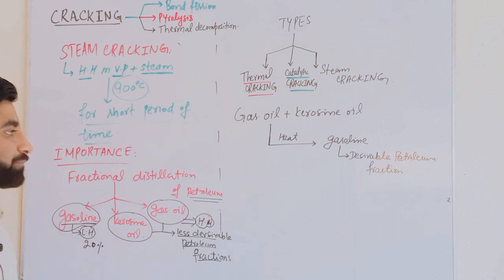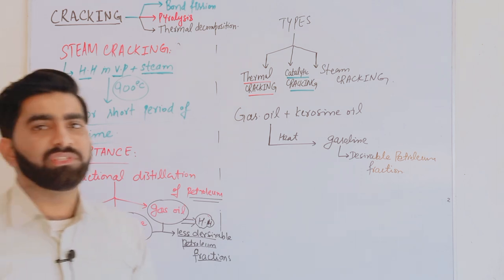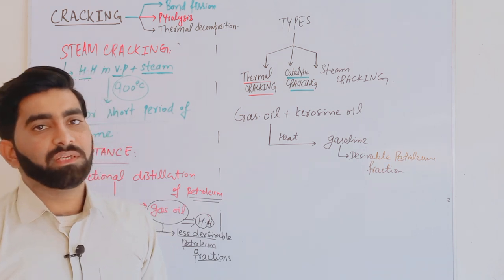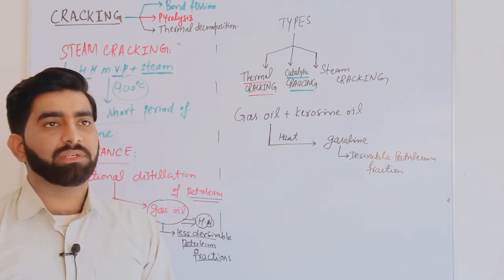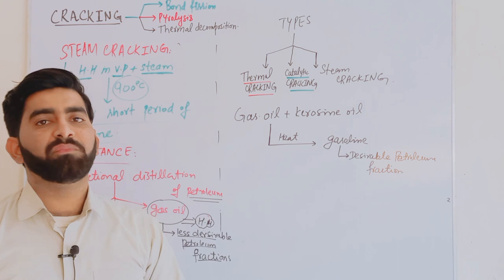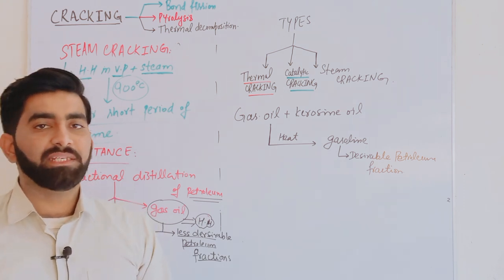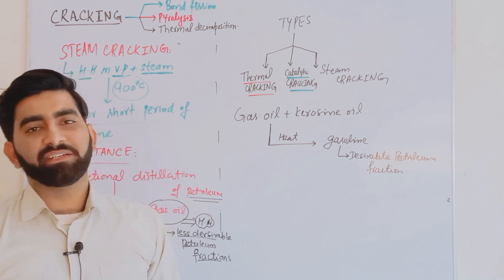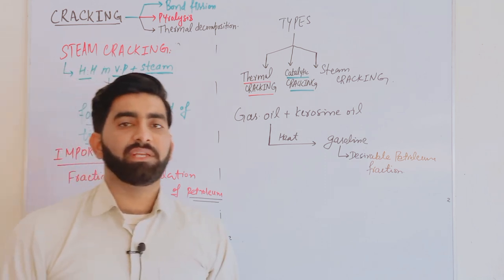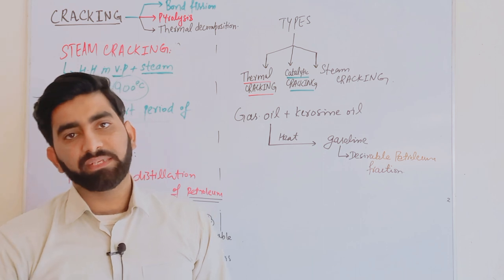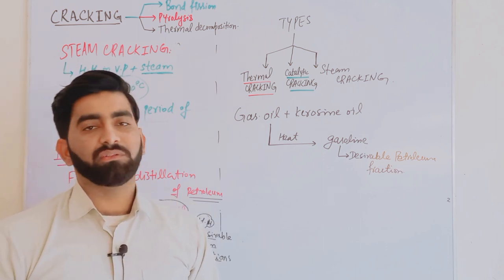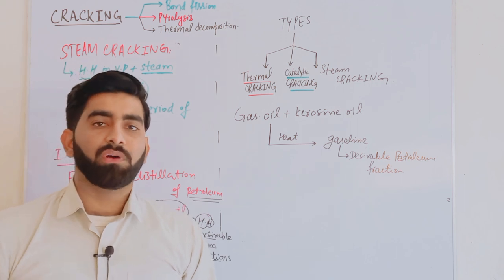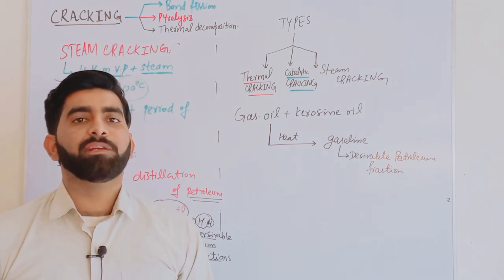When we use cracking, some byproducts are also formed along with the major products. These byproducts include ethene, propene, butene, and benzene. These are used in manufacturing industries such as the drug industry, petrochemical industry, for weed killers, pesticides, and for producing important chemicals like ethanol, phenol, and acetone.